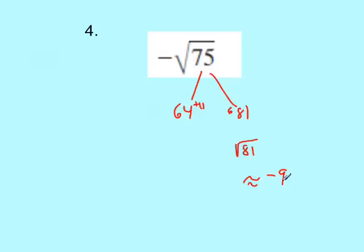It's going to be a little less than negative 9 because we overestimated here. But we'll go with about negative 9 for the answer for the opposite of the square root of 75.